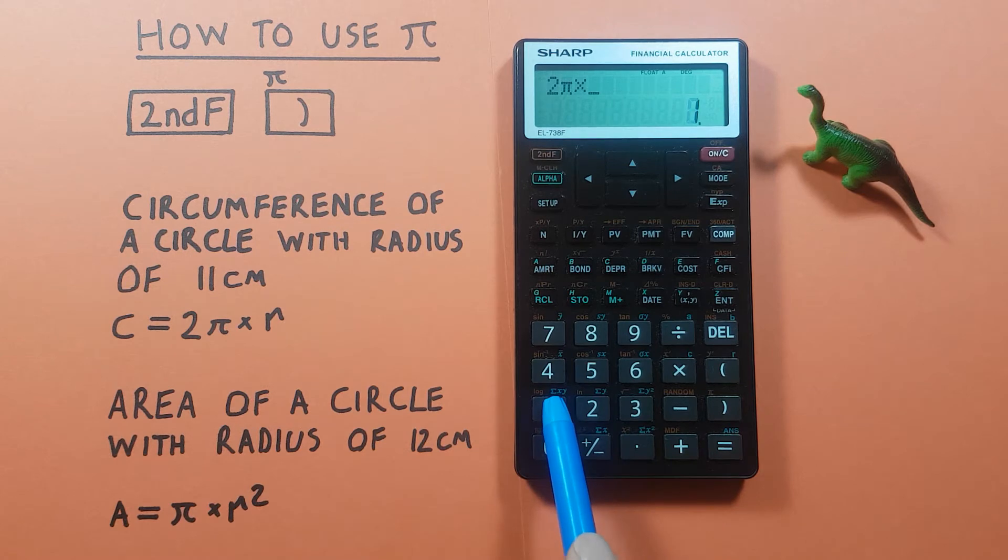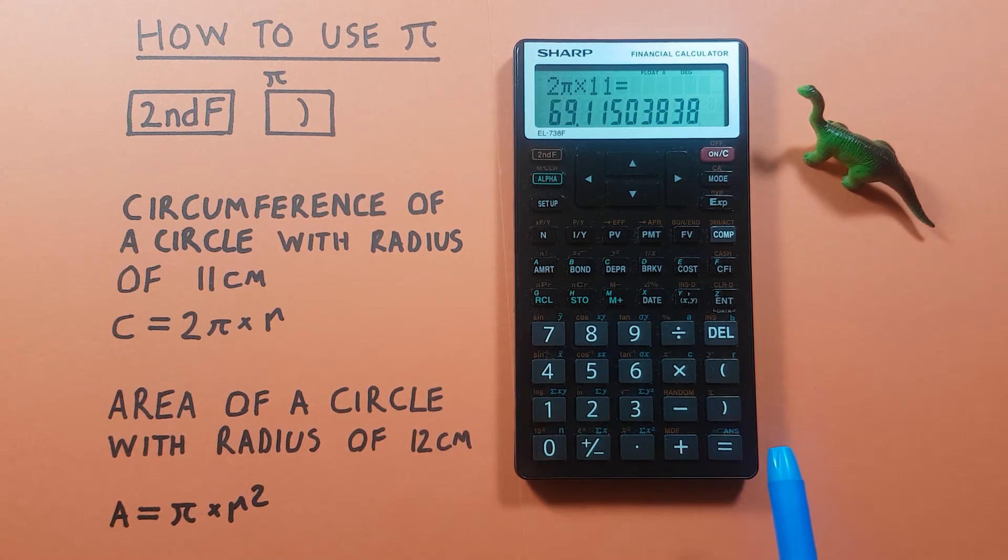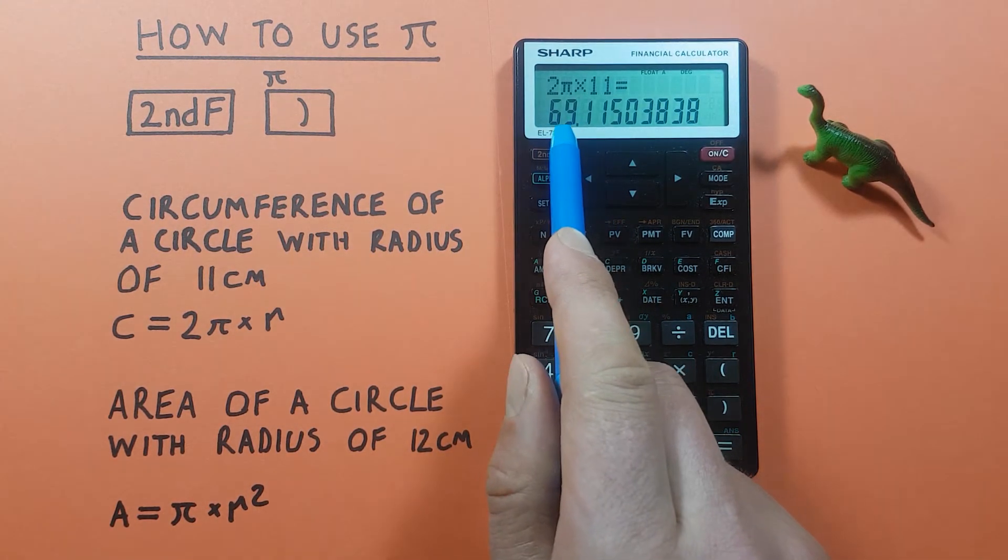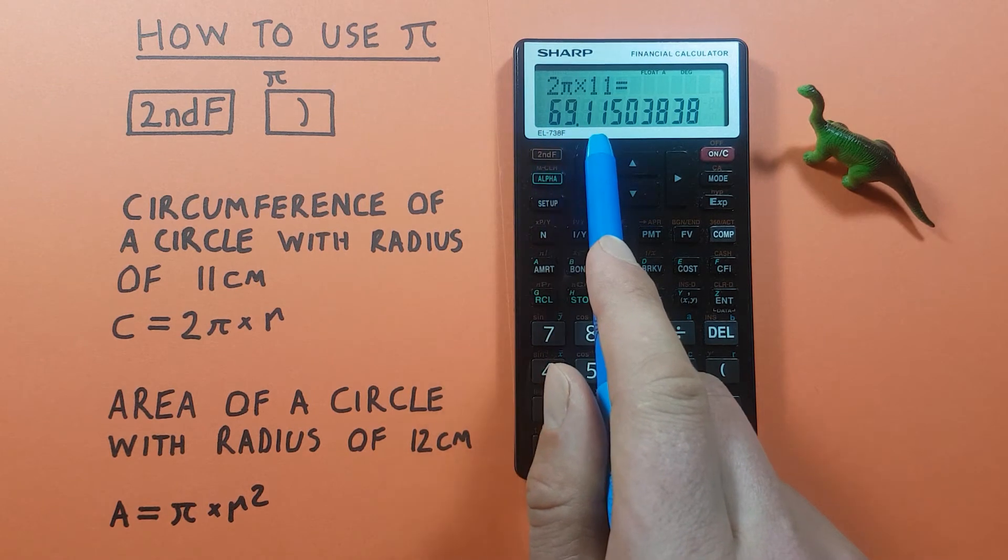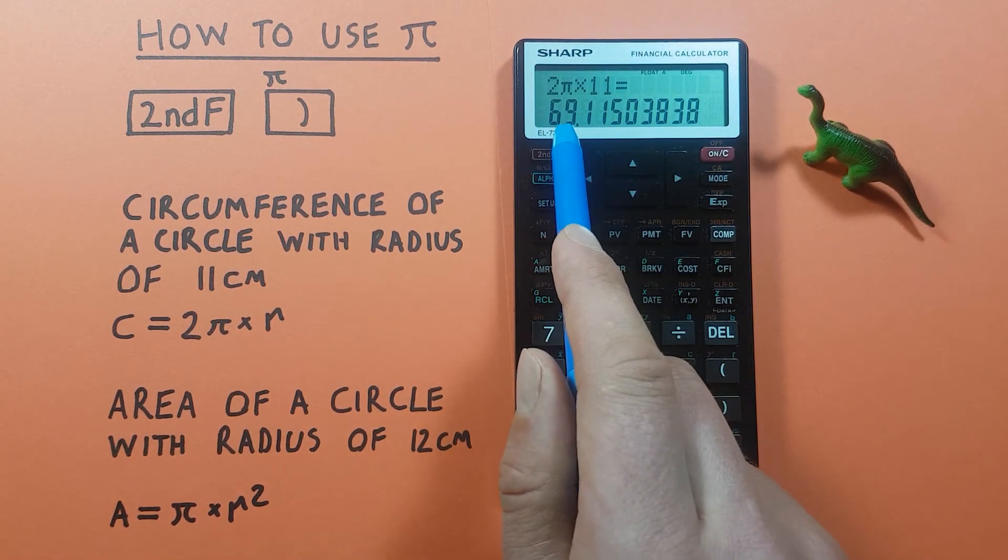We get a result of 69.115 and so on. That's our circumference for that circle.